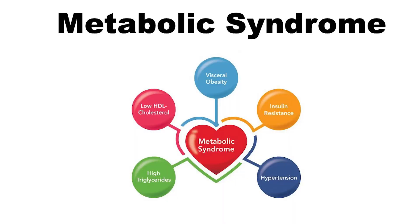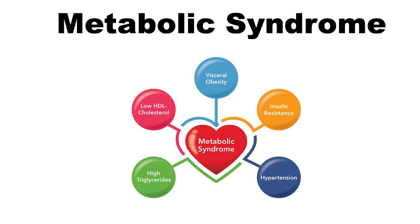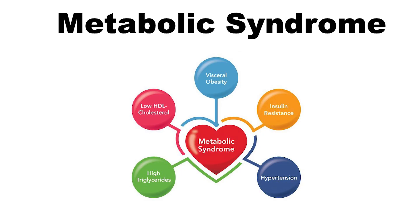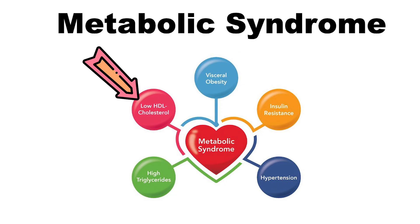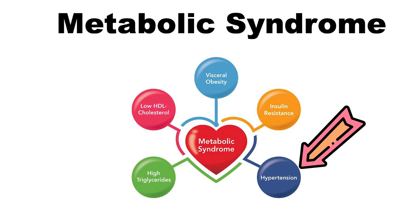The metabolic syndrome is a cluster of five things that we measure very commonly in medicine that all seem to go together. These five things are: one, visceral obesity, defined as a waist circumference of greater than 40 inches for men or 35 inches for women; number two, high blood glucose or type 2 diabetes; number three, a high triglyceride; number four, low HDL or high density lipoprotein; and number five, high blood pressure, also known as hypertension.